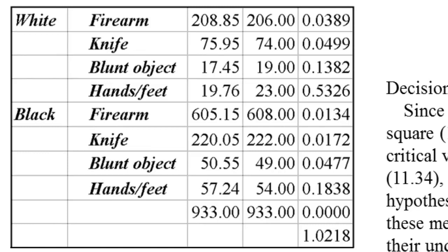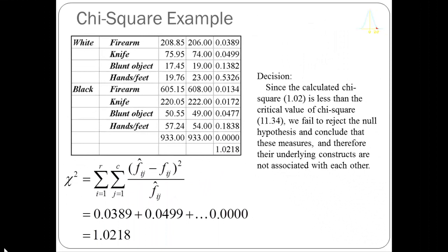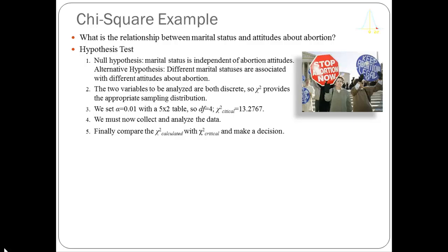I list out my expected values, then my observed values, and then in the last column I calculate my cell chi-square statistic. This is really easy to do if you know how to use a spreadsheet — just by entering those observed values we can calculate the expected very easily and then the cell chi-square statistics very easily. Summing them all up, I get an overall chi-square of 1.0218. That's obviously a lot smaller than 11.34, so I'm going to fail to reject the null hypothesis and conclude that there's no difference in the kinds of weapons white and black criminals use in the commission of their crimes.